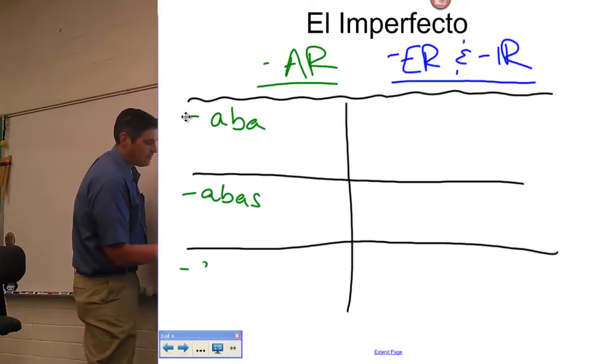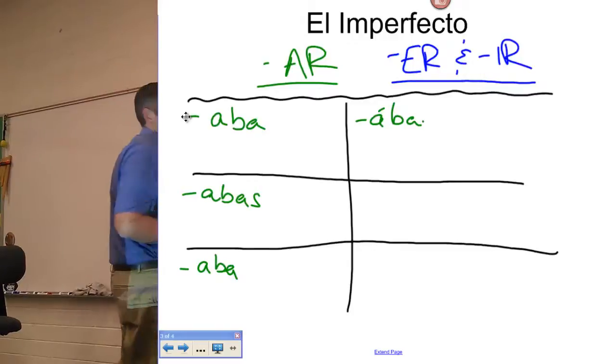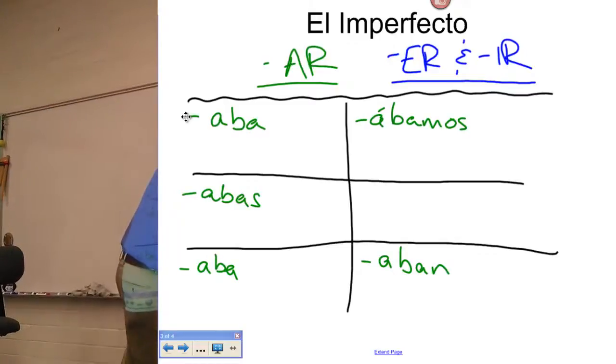Hablabas, hablaba, hablábamos with an accent, skip the vosotros, hablaban. So you remember that the imperfects have those endings in the AR form.